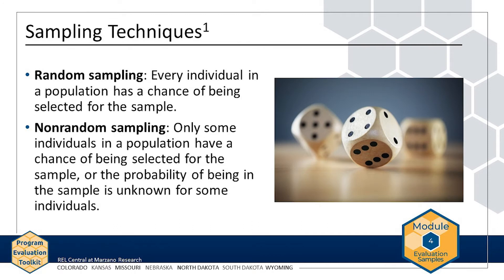There are two techniques for sampling: random sampling and non-random sampling. In random sampling, every individual in a population has a chance of being selected for the sample. For example, if you are surveying all students in a district, each student has a chance of being selected to take the survey, even if the probability is different for each student. Random sampling usually results in a sample that is similar to the entire population, and is much more likely to be representative with respect to all relevant characteristics.